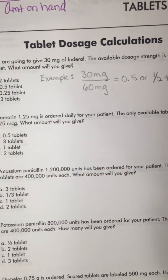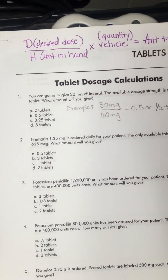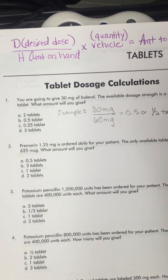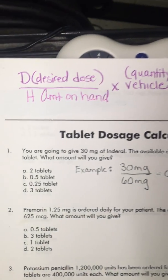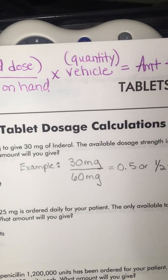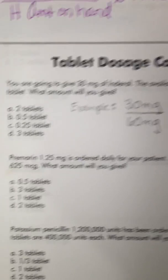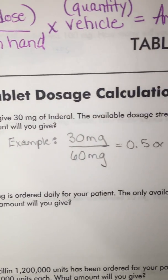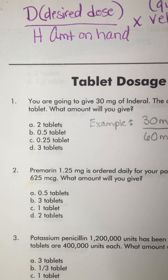Now we are looking at tablet dosage calculations, the D over H times V, which stands for desired dosage over amount on hand times the vehicle. When you're multiplying the quantity, it gives you the amount to give. So I've done number one as an example. I'm going to write it out again just to make sure you have it.